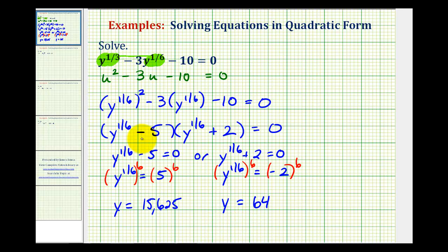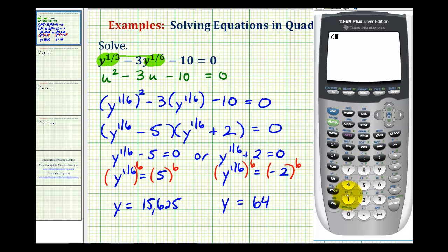So let's go ahead and check this with our calculator. So we'll have 15,625 raised to the one-third power minus three times 15,625 raised to the one-sixth power minus ten. So this solution checks and now we'll check 64.